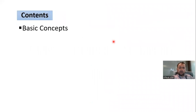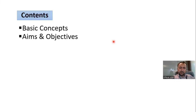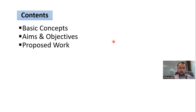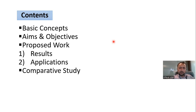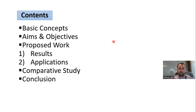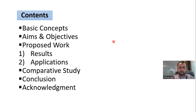Now we'll have a look at the contents of the talk. It includes the basic concepts, the aims and objectives for the proposed work, the proposed work which includes results and their applications, a comparative study of the current and previous work, then we'll conclude and summarize, and finally some acknowledgements.